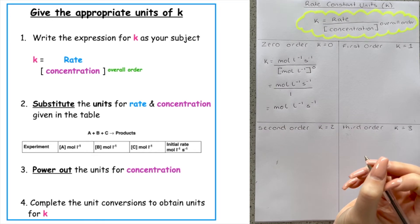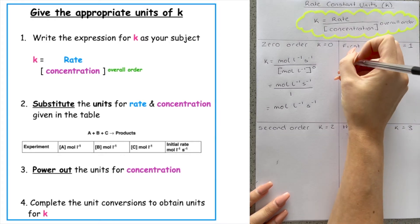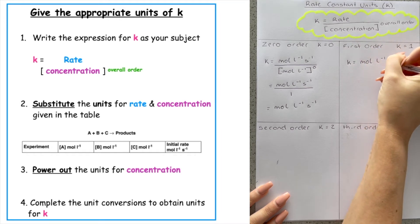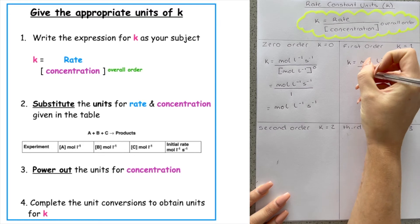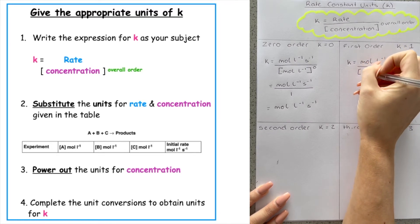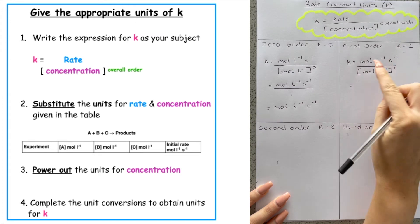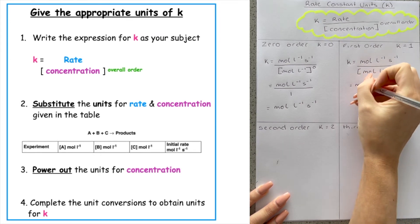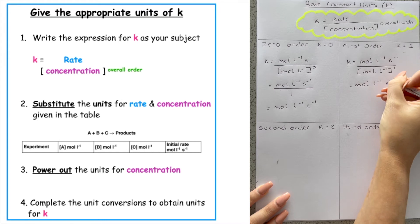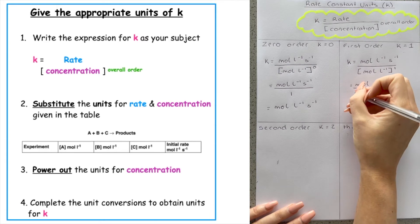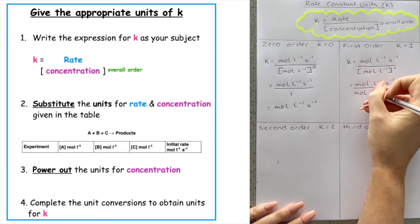We have to do the same thing for second order. So what we can see here is we would do k is equal to, so we've got the unit of rate, which was mole per litre per second, all over the units for concentration, which is moles per litre. But this time we're saying the overall order of the reaction is one. So the top line stays the same, mole per litre per second, all over. And anything to the power of one is just itself, so that becomes mole per litre.